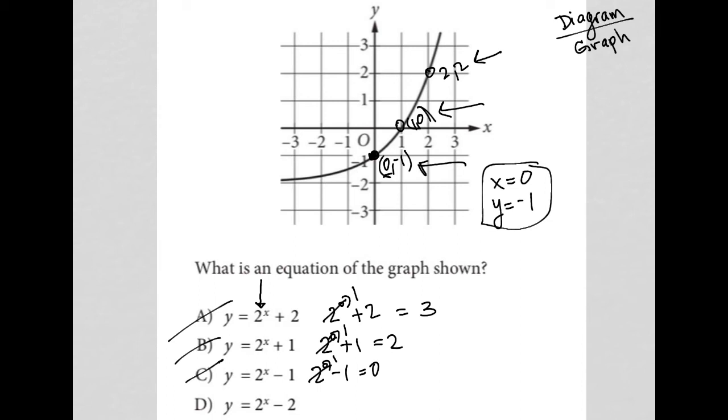And lastly, we have choice D, which I'll write over here. y equals 2 to the 0 minus 2. 2 to the 0 power is positive 1. 1 minus 2 is -1. That's exactly what we want, right? We want x equals 0 to lead to y equaling -1. It is the only answer choice that did that. Therefore, choice D must be the correct answer.